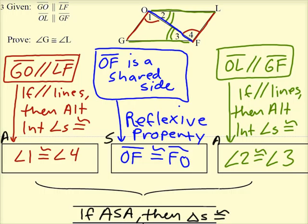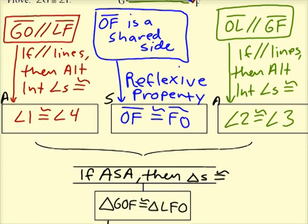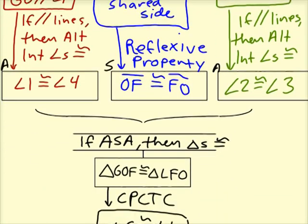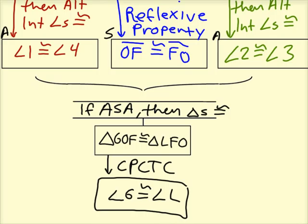So now our proof is done. Scroll through it so you can take a look at the final proof. That kind of looks like a 6, doesn't it? It should be a G.